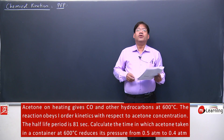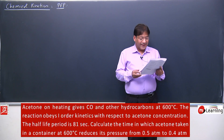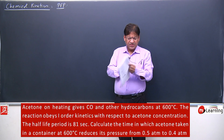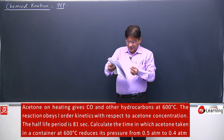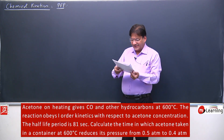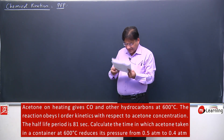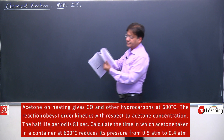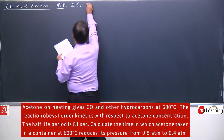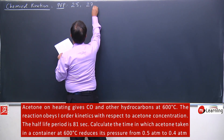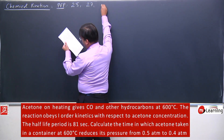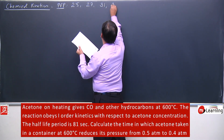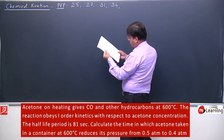Let us continue with the discussion of chemical kinetics problems for practice. We have 8 numerical problems — 4th, 6th, 11th, 17th, 19th, 23rd, 24th — these problems were done. Now I will discuss problem number 25, 27, 31, 34, and 42.